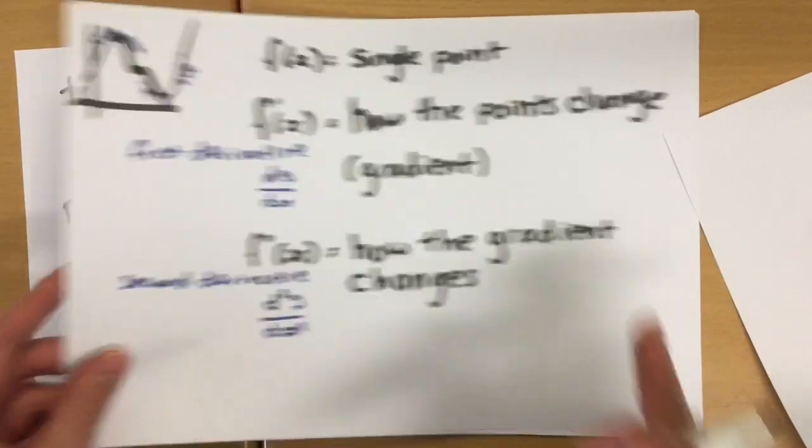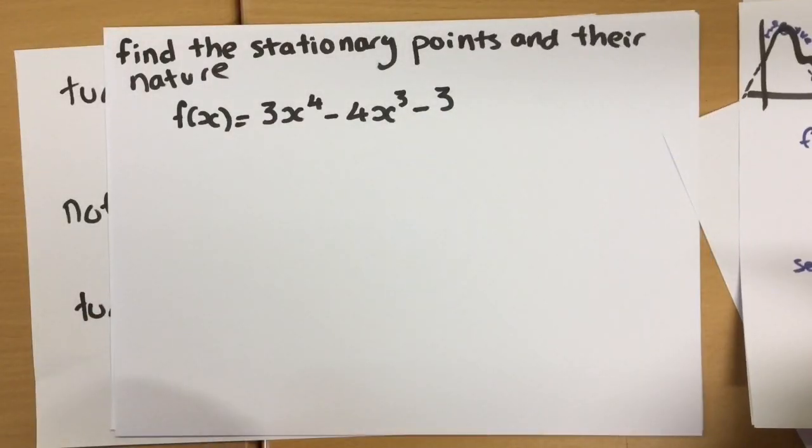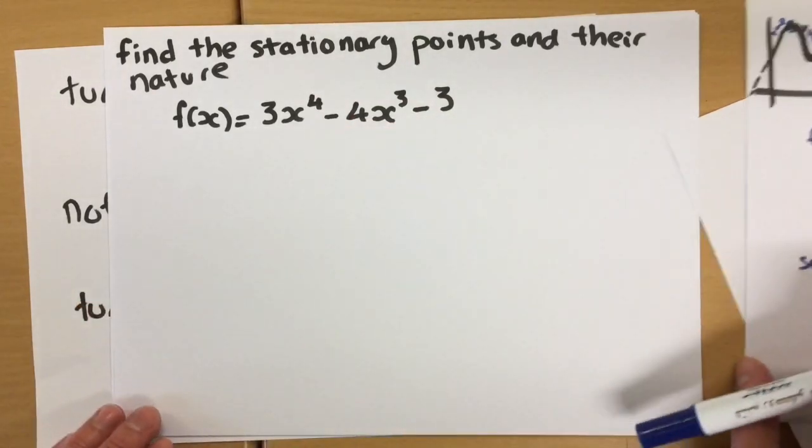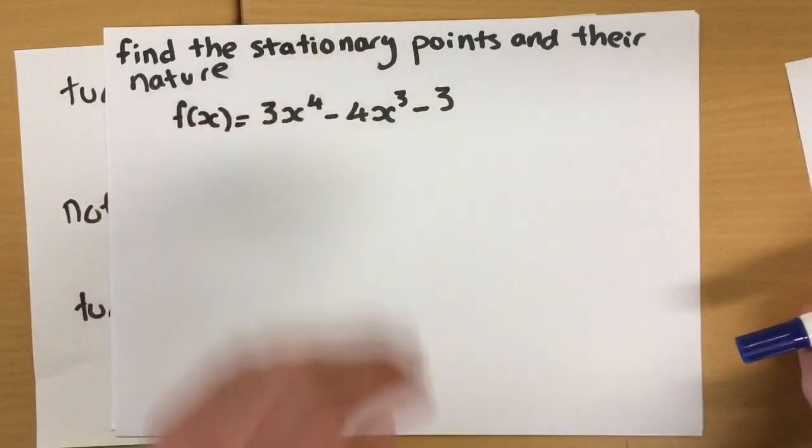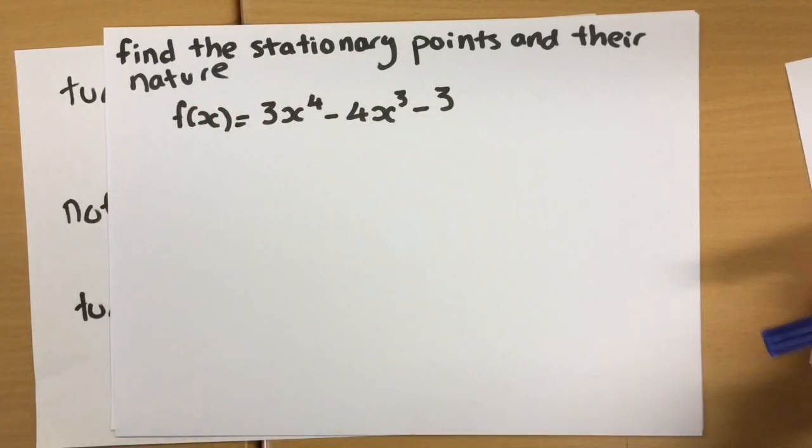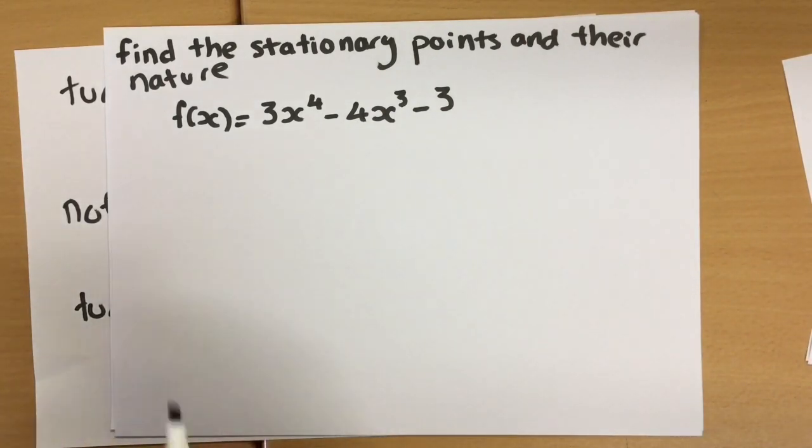Let's look at how we're going to use this in a setting. So we've been asked here to find the stationary points and their nature. And their nature means, is it a maximum, is it a minimum, or is it an inflection?